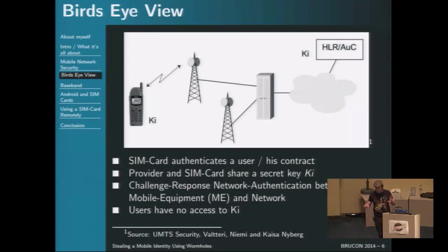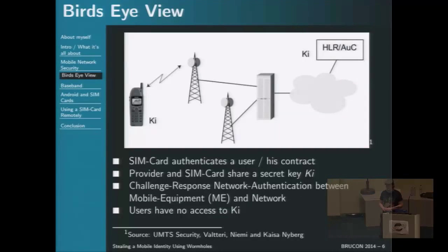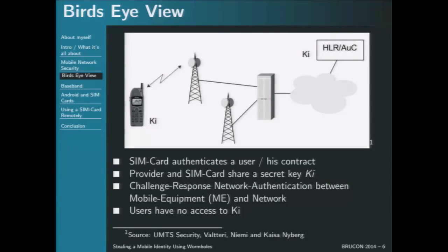A brief overview of mobile network security: when you have a contract with a mobile network provider, they give you a SIM card which you use for authentication. The SIM card has a secret key that the provider also has, and by a challenge-response mechanism, the network authenticates you. The user has no access to the SIM card secrets. The secret key is called KI, and you don't know it.